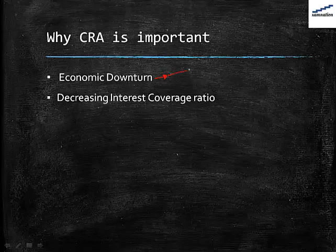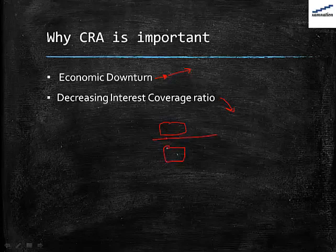In an economic downturn situation, it is very important for the CRA to give the true picture of companies. In such times, the interest coverage ratio of companies is very low. The interest coverage ratio is PBIT — profit before interest and tax — divided by total interest. This represents the money available to pay out the interest. When interest-paying capability decreases due to economic downturn, it is very important that the CRA performs its role well.